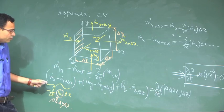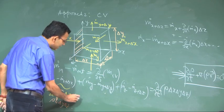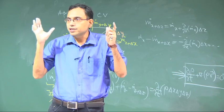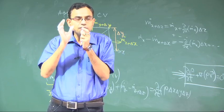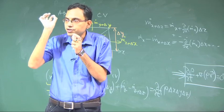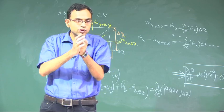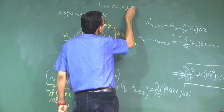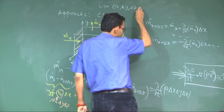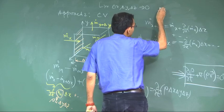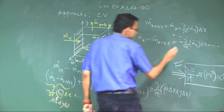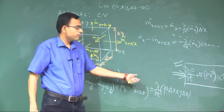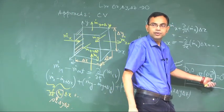Combining all terms and taking the limit as delta x, delta y, delta z tend to zero — we take this limit because we want a differential equation valid at a point, so we must shrink the volume to a point. When we take this limit along with delta t tending to zero, we are left with: del/del-x(rho u) plus del/del-y(rho v) plus del/del-z(rho w), which is the divergence of rho times v.